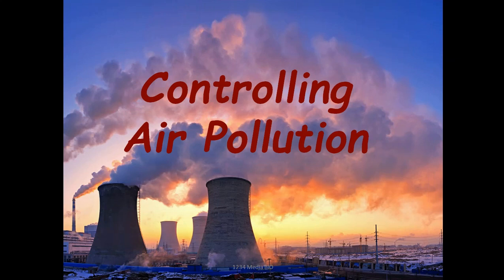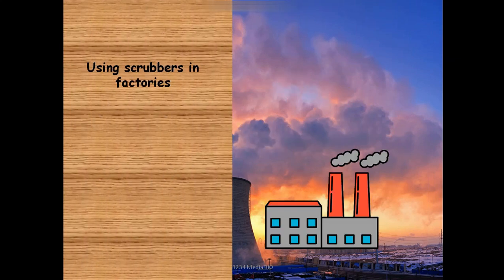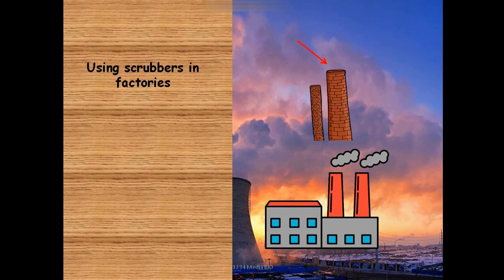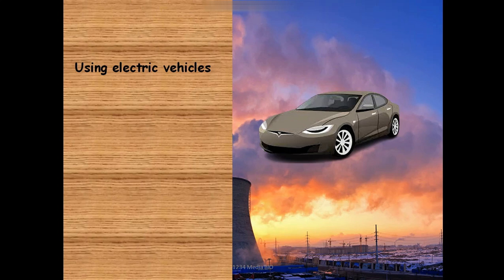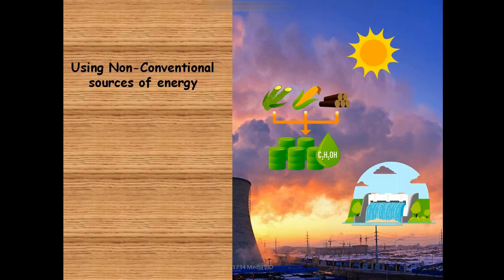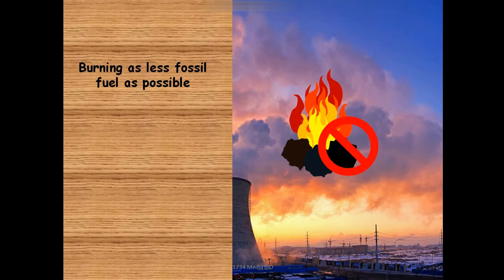To control air pollution, we can use scrubbers in factories. Scrubbers are materials which can absorb the pollutants from the smoke — like a wet sponge placed in the exhaust where carbon molecules stick to it. We can also use electric vehicles, which are pollution-free; Tesla makes such cars. Using non-conventional sources of energy is one of the best options — they are cheap, pollution-free, and abundant.